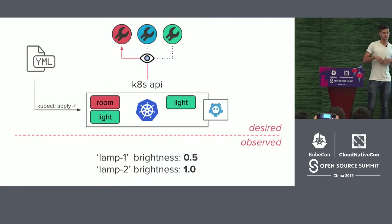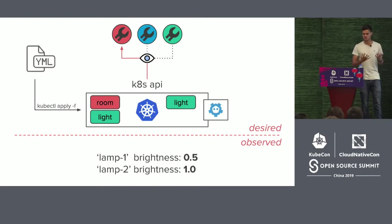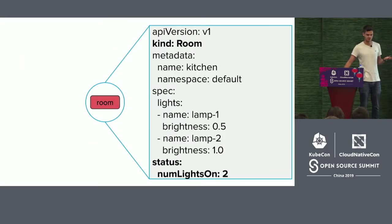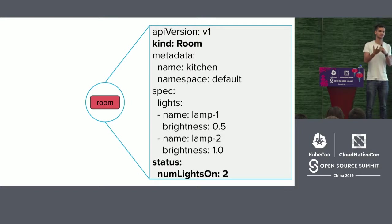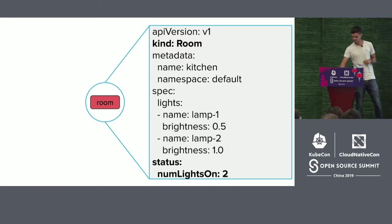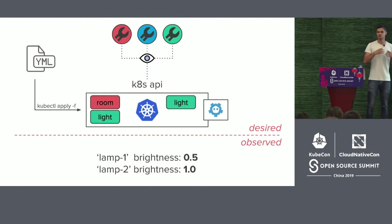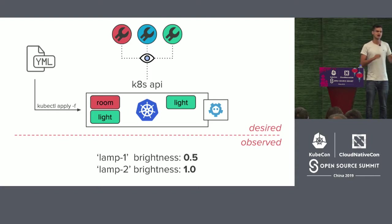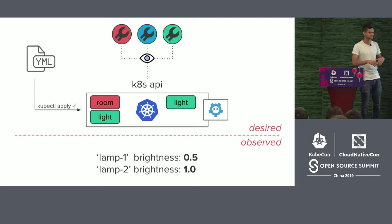The light resource is the boundary between two teams: the room team creates the light resource, and the lights team's controller satisfies it. The lights controller talks to the LED bulbs, notices they are off, turns them on, and updates the status in the Kubernetes API to reflect the spec — successfully reconciling. The room controller is then notified and updates the room resource status. The user only needs to look at the room resource to see the status. And if a controller goes down, it's decoupled from the API — when it comes back, it reconciles, and because the API is level-based, that just works.